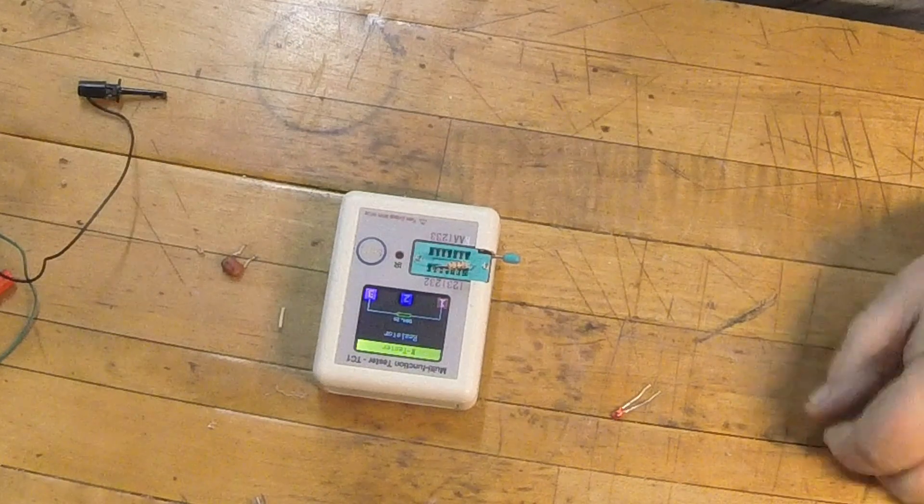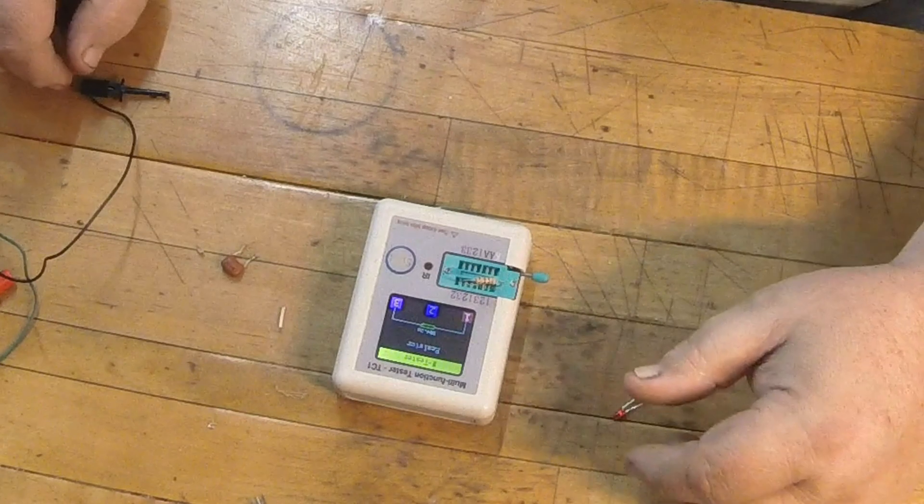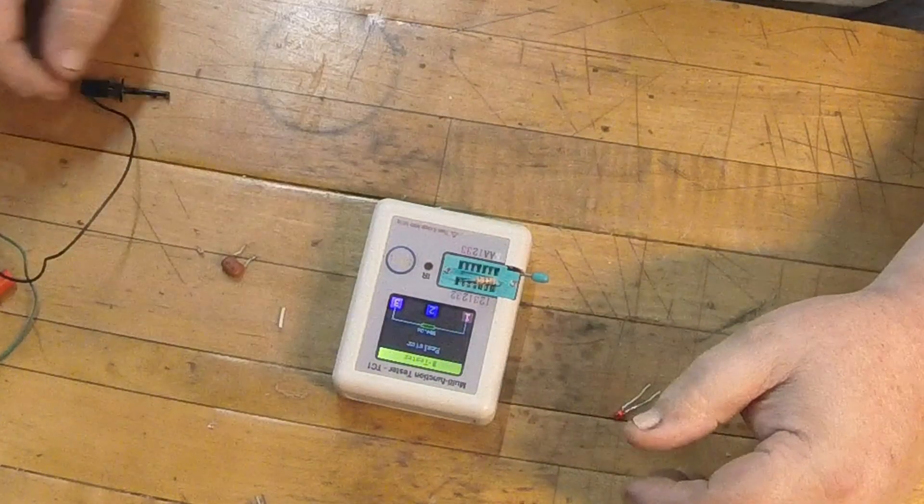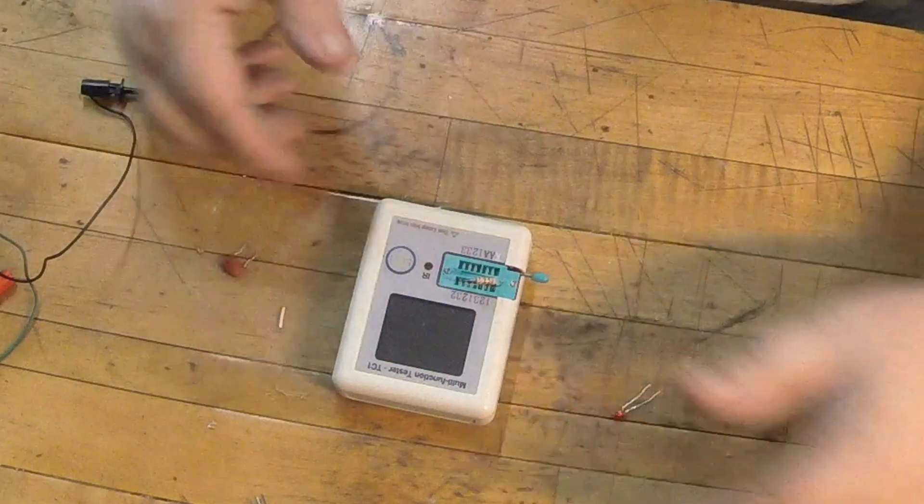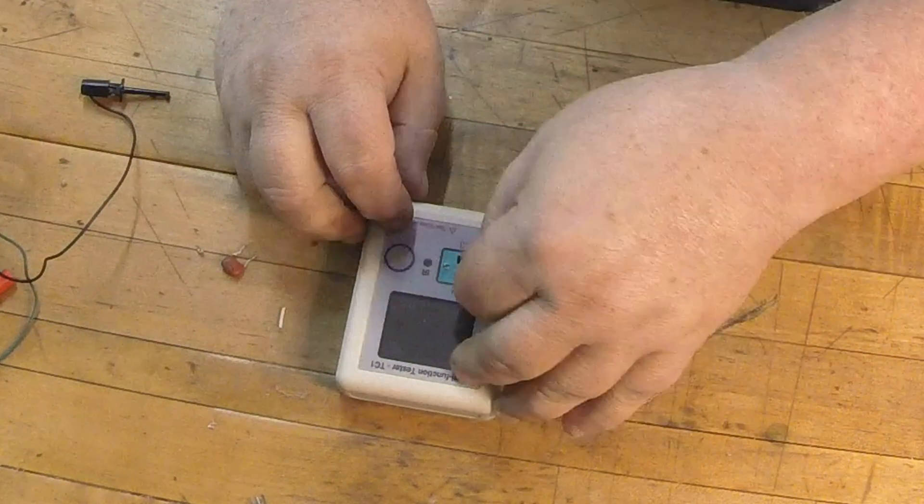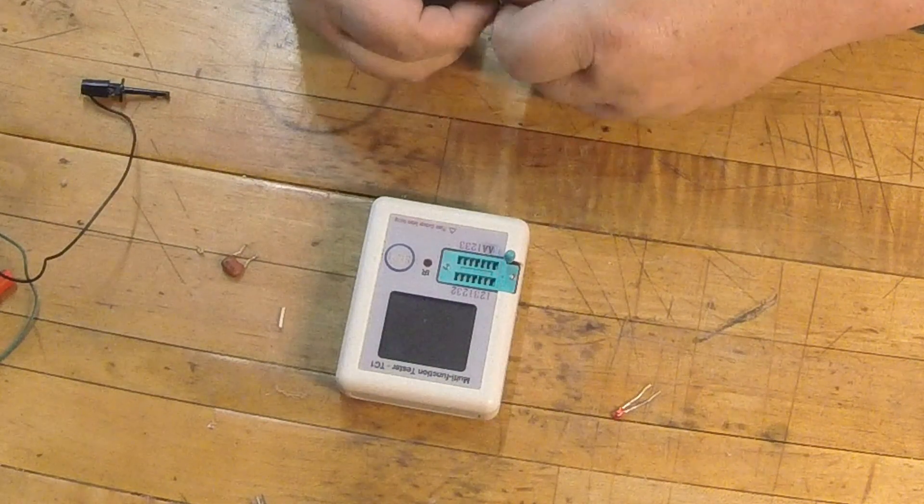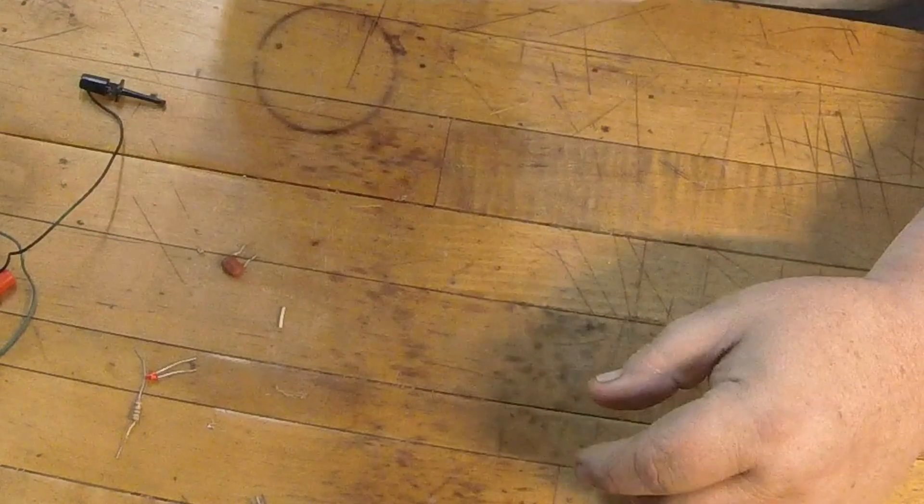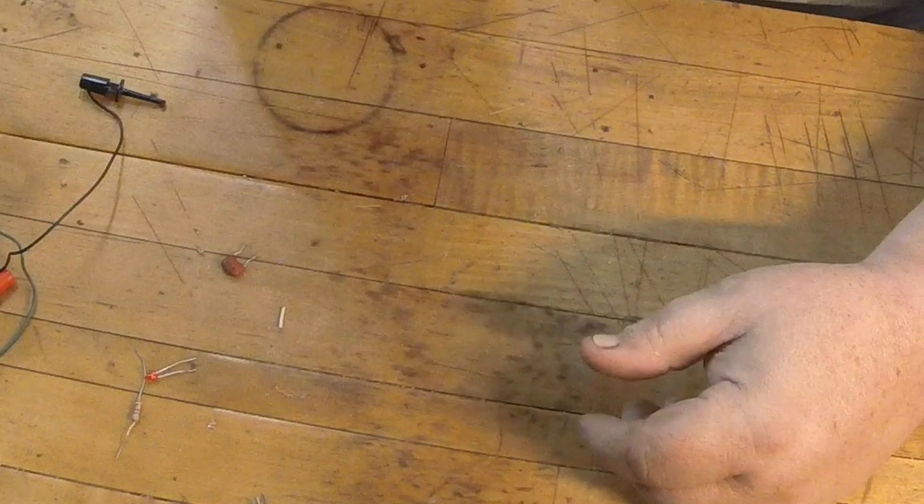How can you go wrong with that folks, for $22? I mean if you're working on something and you think you got a cap bad, you pull the cap out, put it on here, boom, test it. It's either in tolerance or it's not. Resistors, transistors, diodes. There are some limitations on it, you can read that, but for the most part, like I said, it's probably one of the most handy little items I have sitting on the bench. This one here is actually rechargeable, so it doesn't even take batteries.